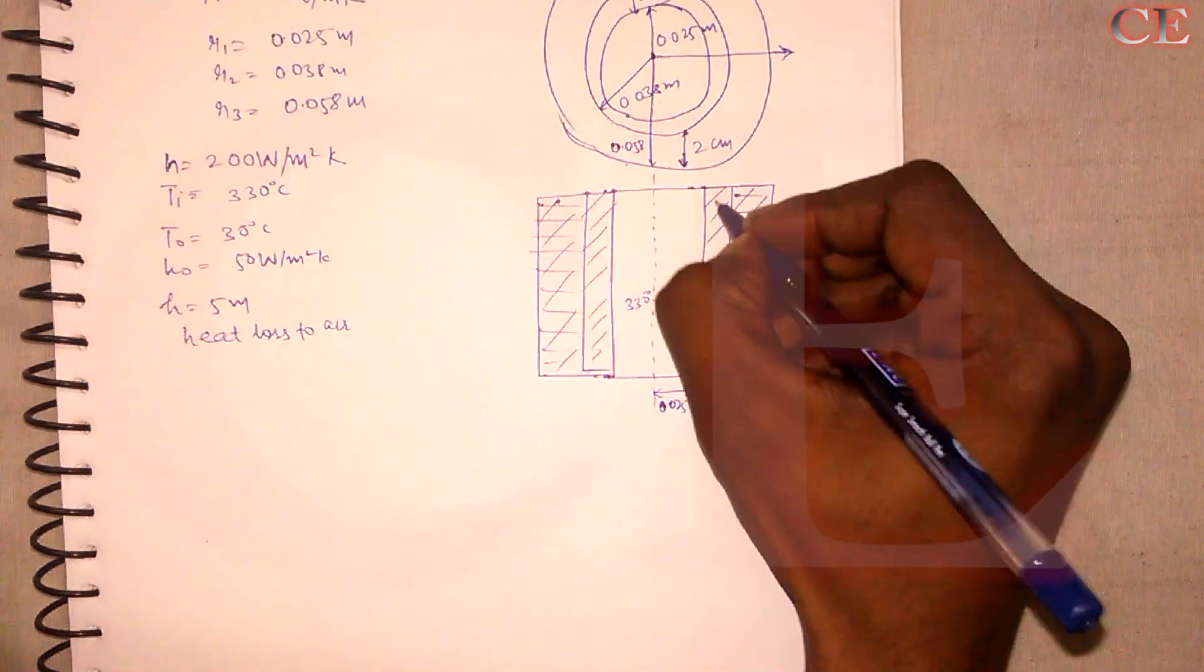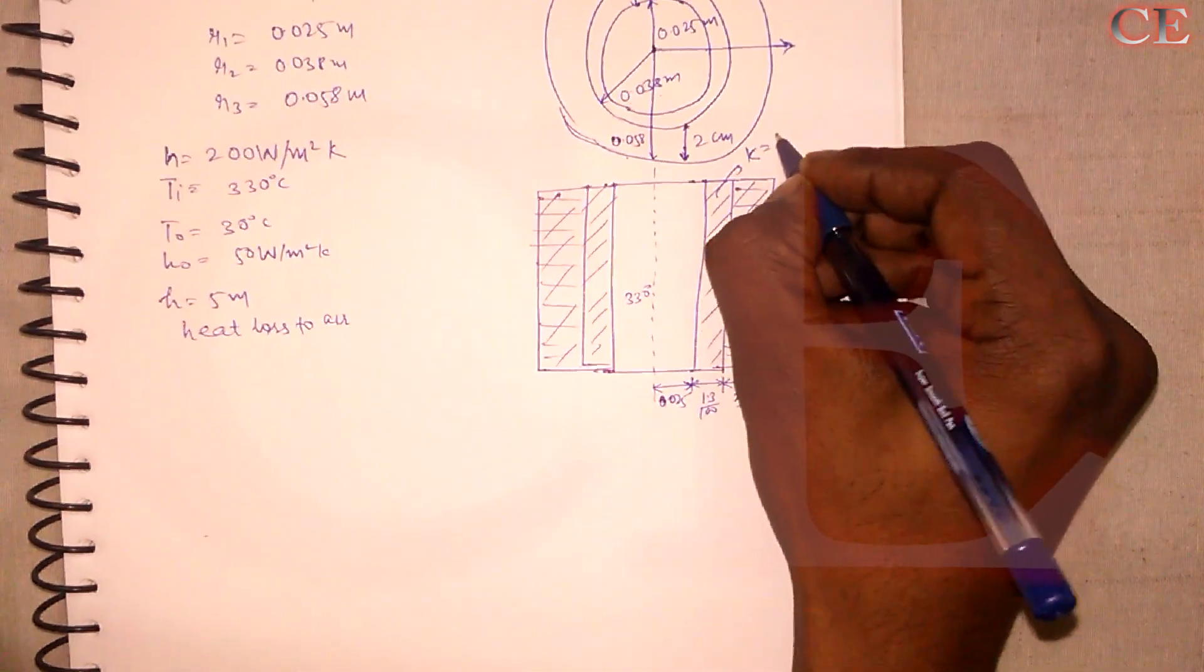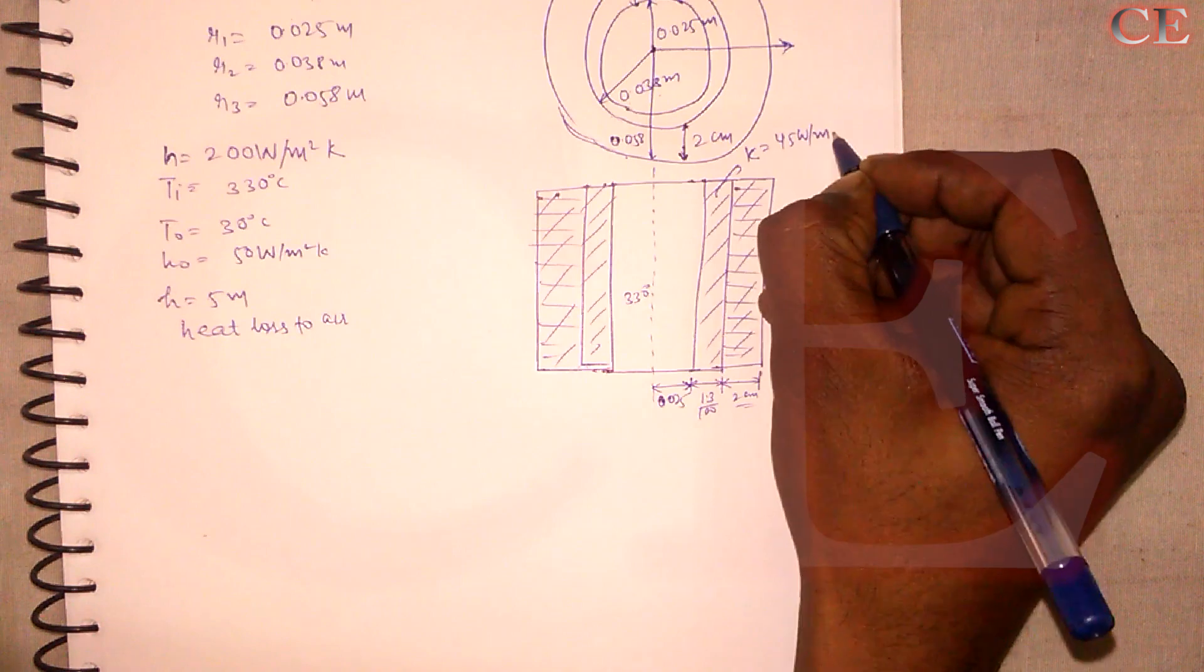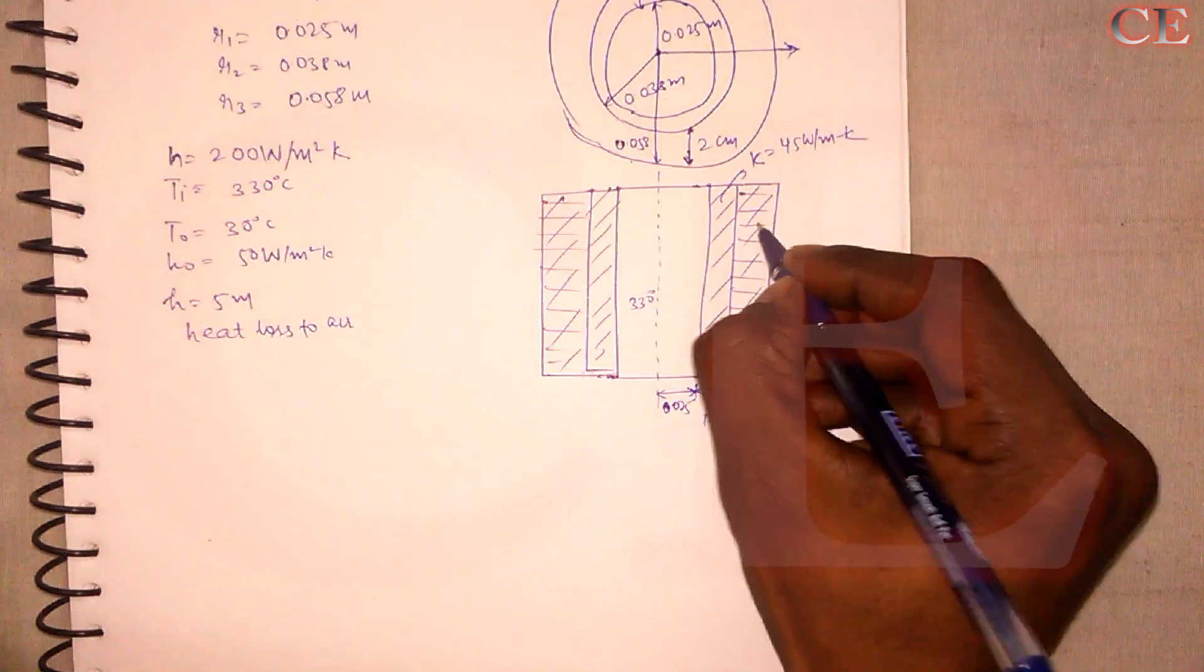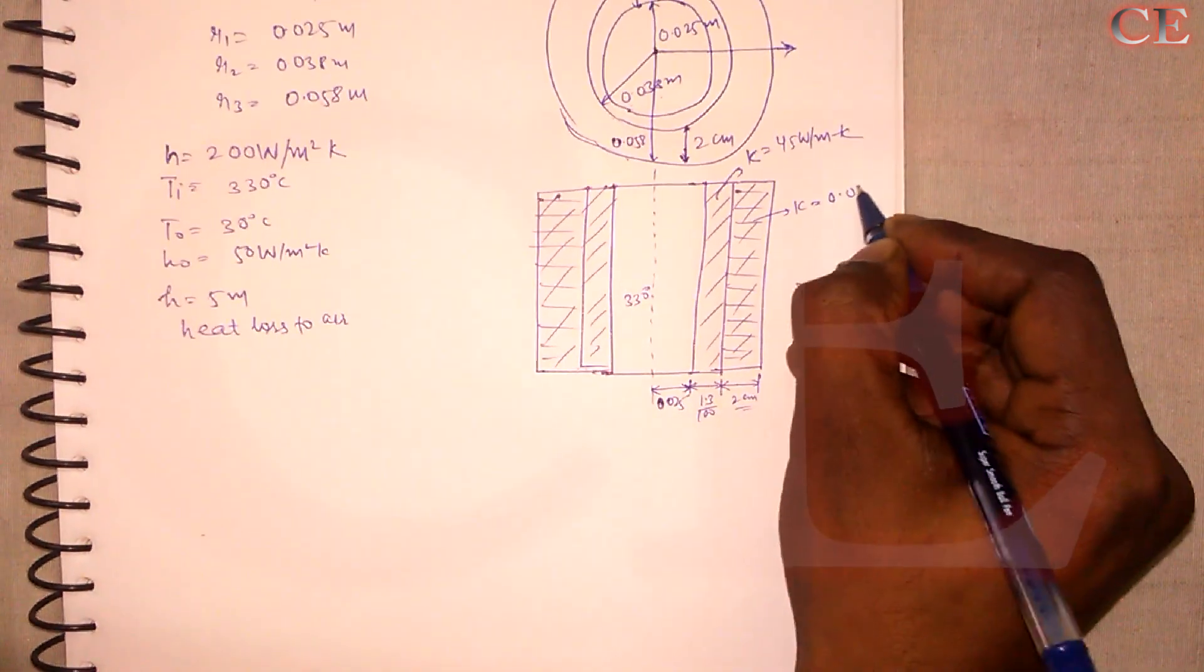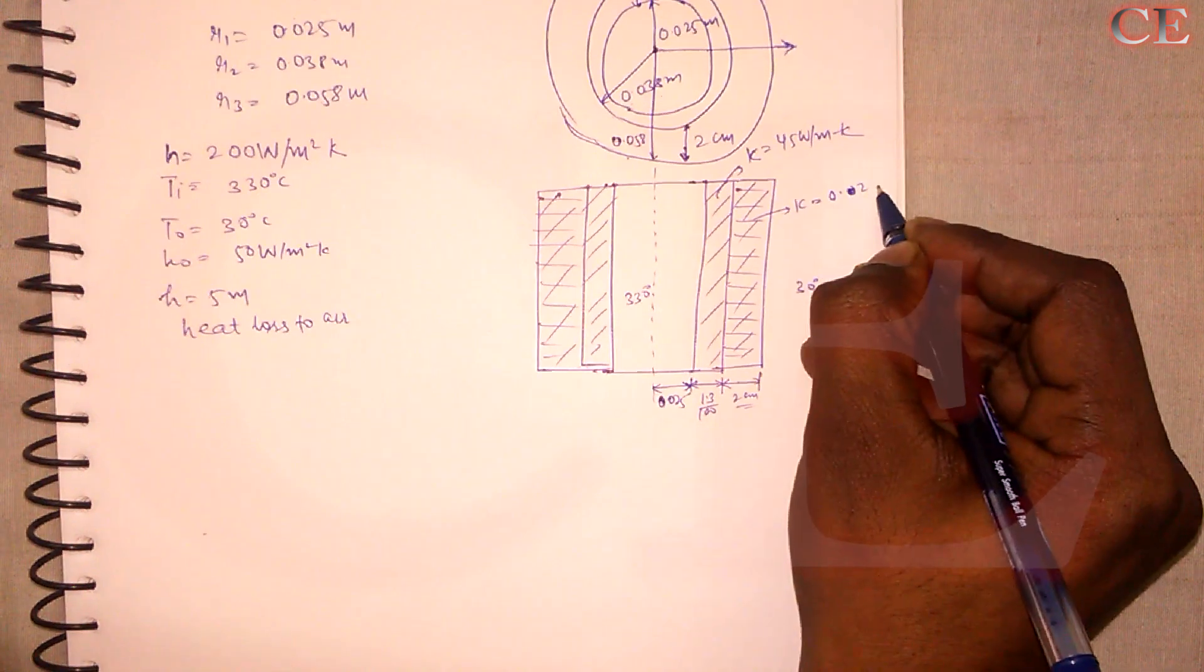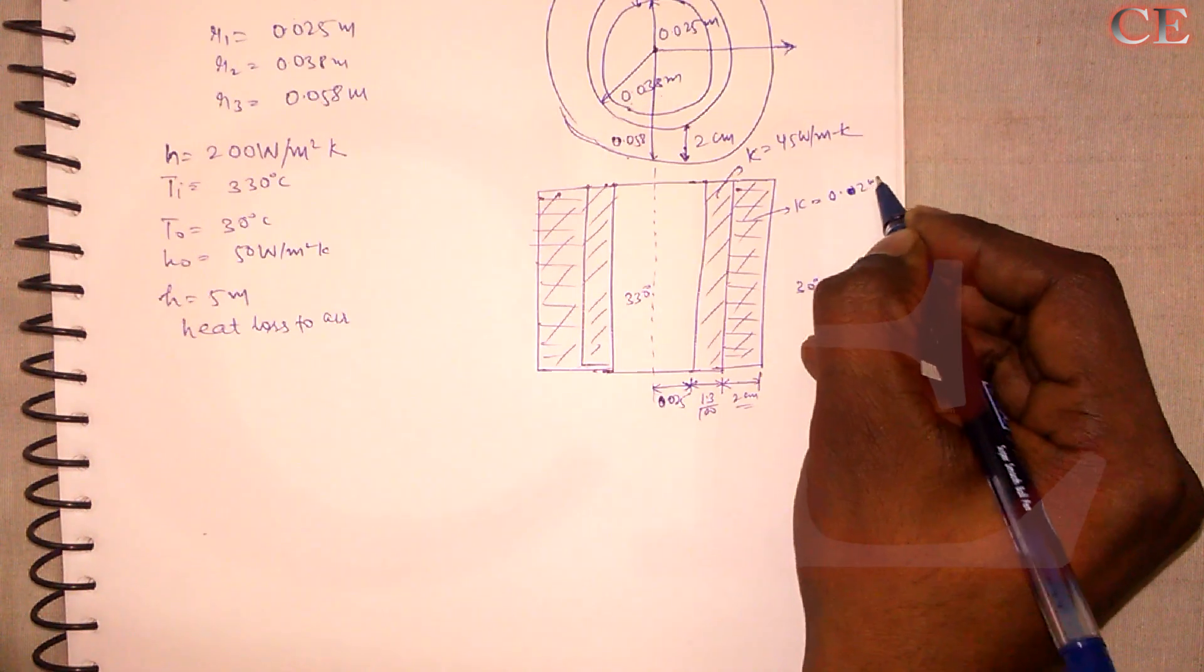Now it is flowing inside the tube. The outer surface of the insulation is exposed to the ambient air at 30 degree centigrade. Means the outer temperature T outer is given as 30 degree centigrade. With the convection heat transfer coefficient. So H outer is given as 50 Watt per meter square Kelvin. So we have collected almost all the data that is required. Now let us move further. What is it is asking that calculate heat loss to air from the 5 meter long tube. So here height is given as 5 meter. And it is asking the heat loss to the air. Heat loss to air. Means the direction of heat flow would be something like this. Would be in this direction.